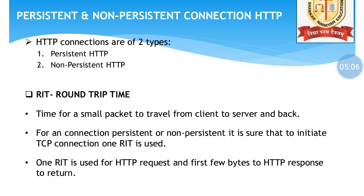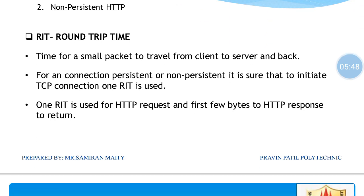For any HTTP connection, whether persistent or non-persistent, at least one RTT is used to initiate the TCP connection. Additionally, one RTT is used for the HTTP request and the first few bytes of the HTTP response to return. So a minimum of one RTT is always required for TCP initiation.